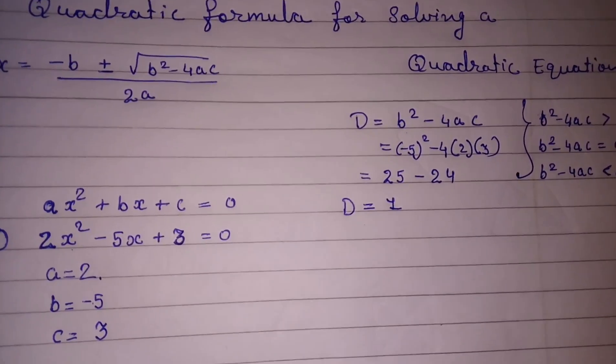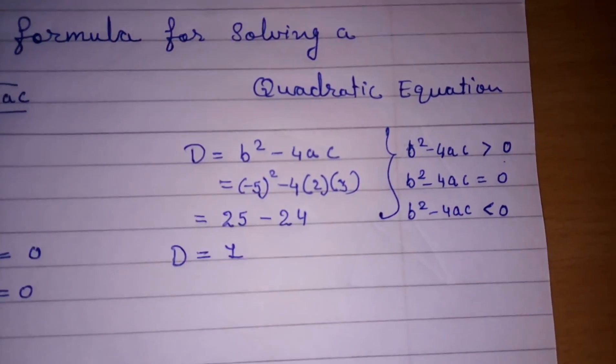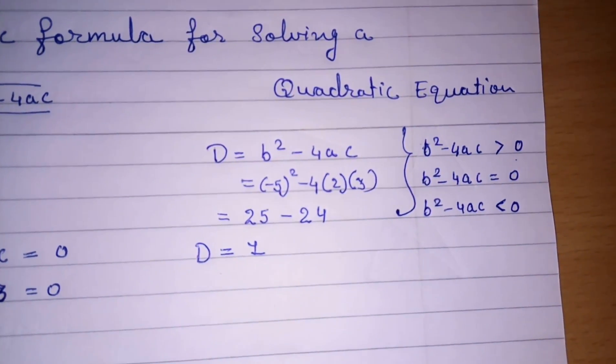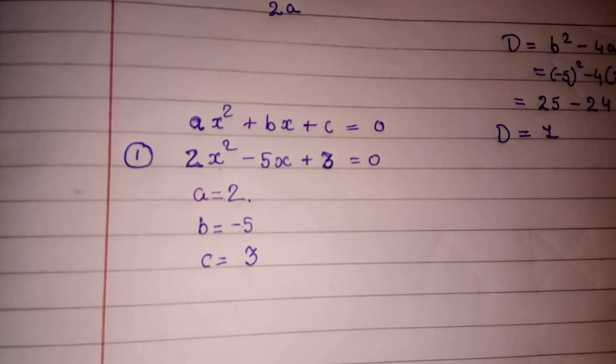Now we come to know that D is a positive number. So what we had written, b² - 4ac is greater than 0. So we will get two different roots. Now we will find the roots.